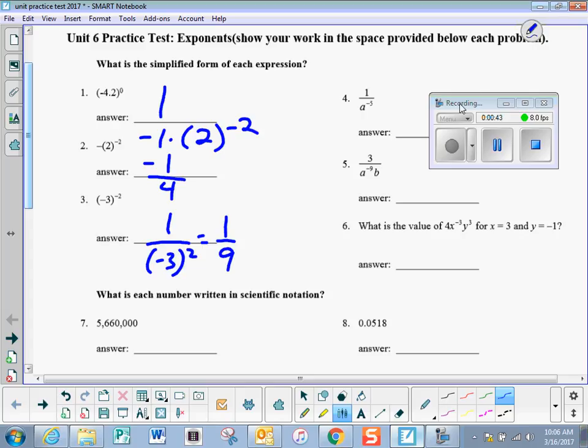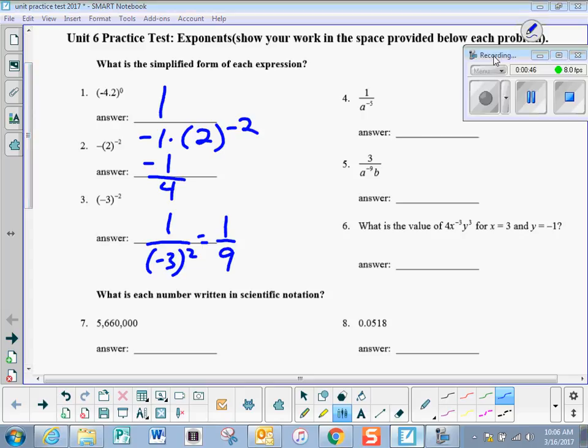On number 4, we have a negative exponent in the denominator, so to make it positive, we move it to the numerator.